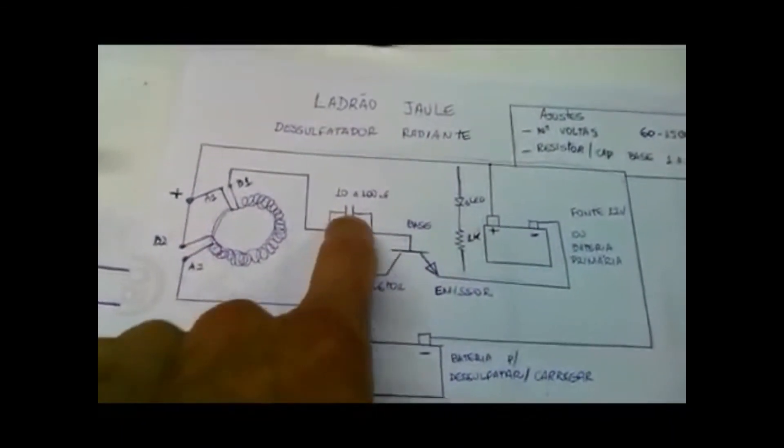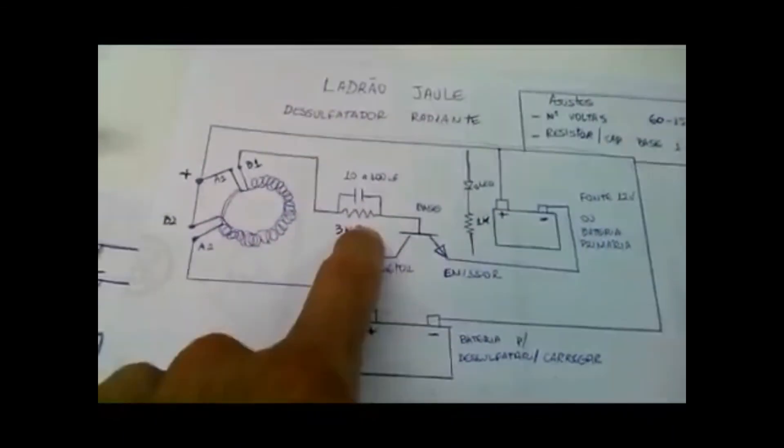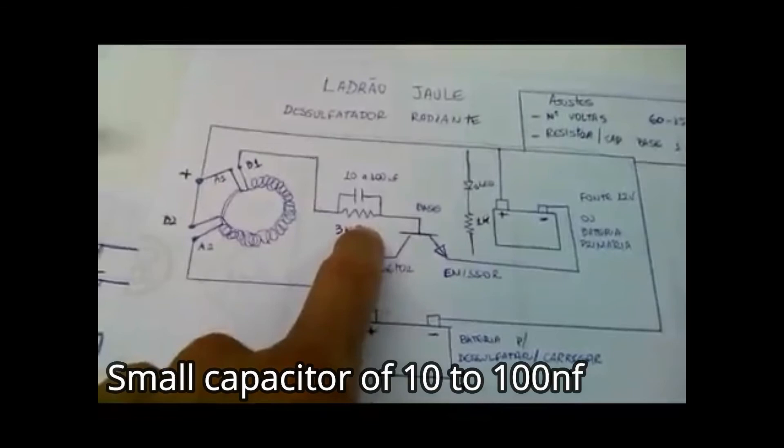This small capacitor across the resistor, 3K3, helps us to get it to work. Without that capacitor, 10 nF, we lose the points and the circuit doesn't work.